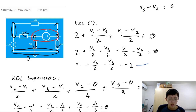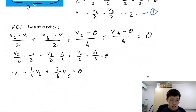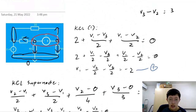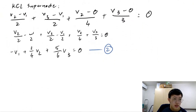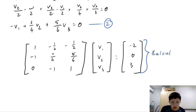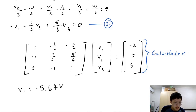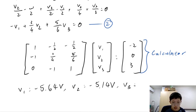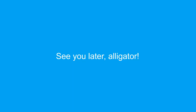So we have our three equations. Putting this in matrix form, we can punch this into our calculator and get the answers: V1 equals negative 5.64 volts, V2 equals negative 5.14 volts, and V3 equals negative 2.14 volts. In the next video, we will learn how to conduct circuit analysis using the mesh current method.